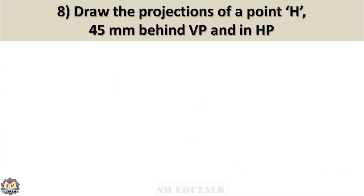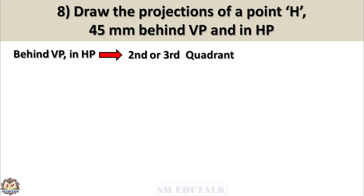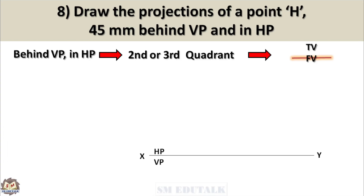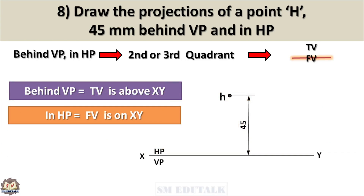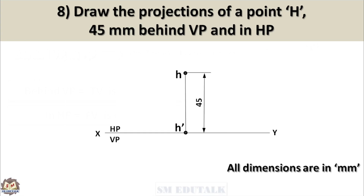Eighth problem: Draw the projections of a point H, 45mm behind VP and in HP. Given condition: behind VP, in HP — so point H may be in the second or third quadrant. Hence, the top view should come above the XY line and the front view should be on the XY line. Locate the top view H 45mm above the XY line. Draw a projector vertically downward from H until it intersects the XY line — mark that intersecting point as the front view H'.